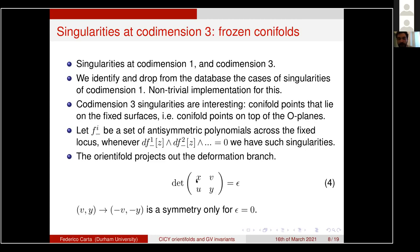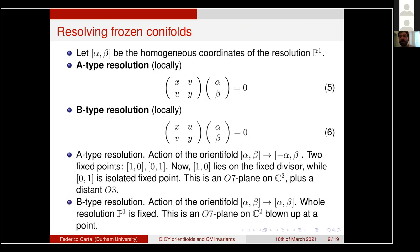A crucial property of these conifolds is that the orientifold projects out the deformation branch. The deformed conifold takes the form XY - UV = ε, and locally the orientifold action flips the V and Y coordinates. This is a symmetry only if the deformation parameter ε = 0, so these are called frozen conifolds. However, you can resolve frozen conifolds: just as the usual conifold has two resolution branches connected by a flop, we have type A and type B resolutions.